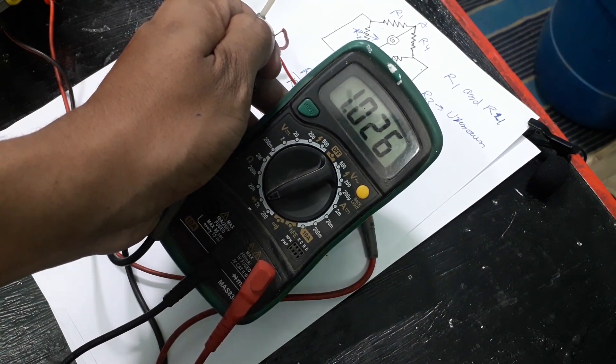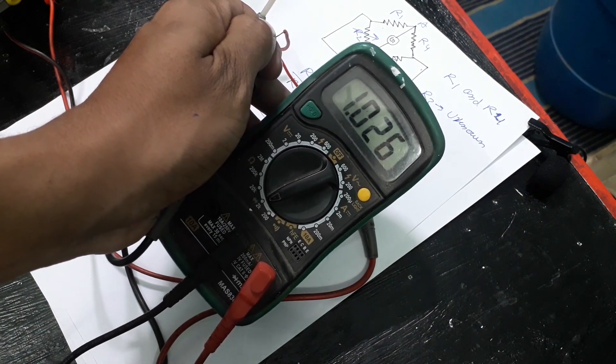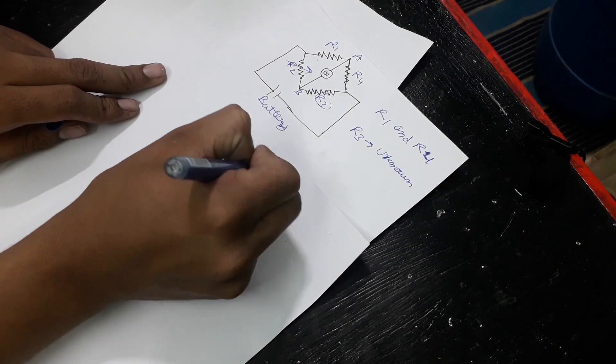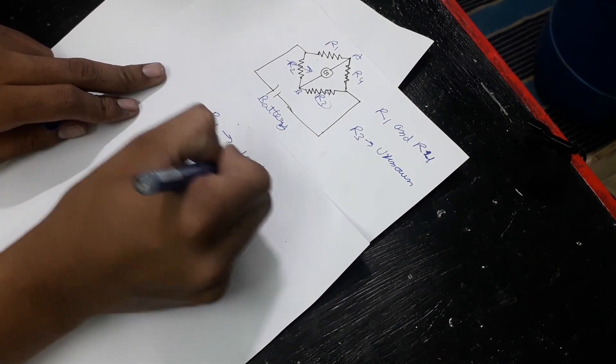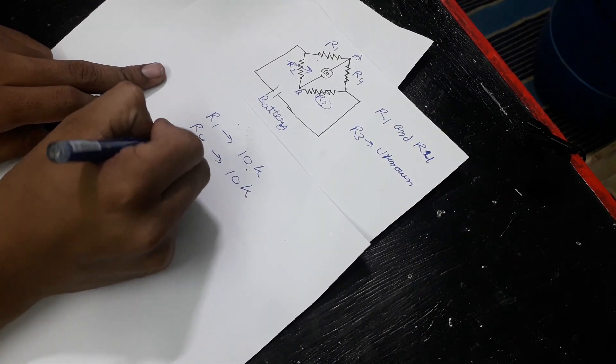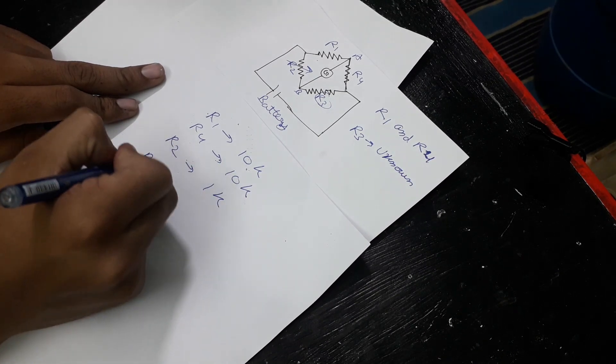So now let's put all the values in the formula and find the unknown resistance. We have R1 as 10k, R4 as 10k, and the variable resistance R2 as 1k. And we need to find R3.